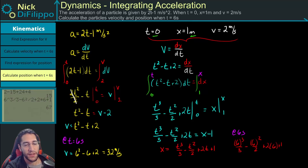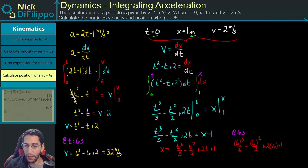We get a position of 67, so x equals 67 meters.